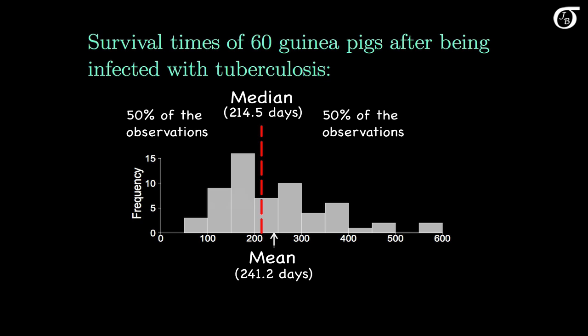These larger values in the right tail will have more of an effect on the mean than the median. They'll pull the mean out toward them a little bit. This distribution is a little right skewed, and for right skewed distributions the mean is greater than the median.